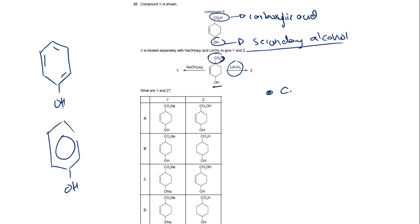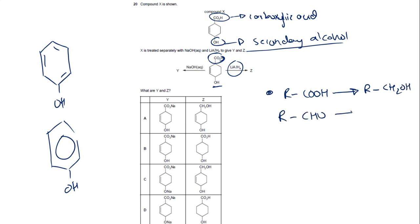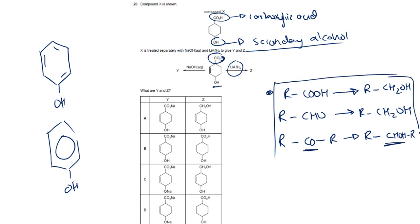LiAlH4 is a reducing agent. Alcohols are never reduced — only aldehydes, ketones, and carboxylic acids are reduced. Key reduction rules: RCOOH → RCH2OH (primary alcohol); RCHO → RCH2OH; RCOR' (ketone) → RCHOHR'. So the –COOH group gets reduced to –CH2OH. The secondary alcohol and ring remain unchanged. Option D is wrong because it shows –CH2H rather than –CH2OH.